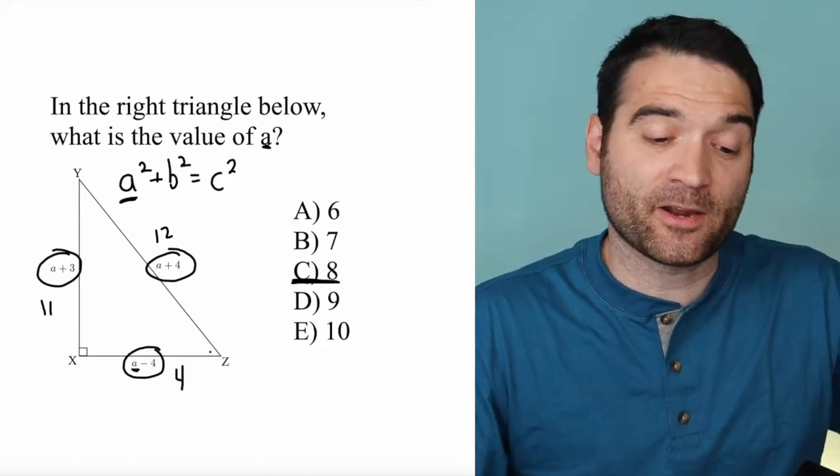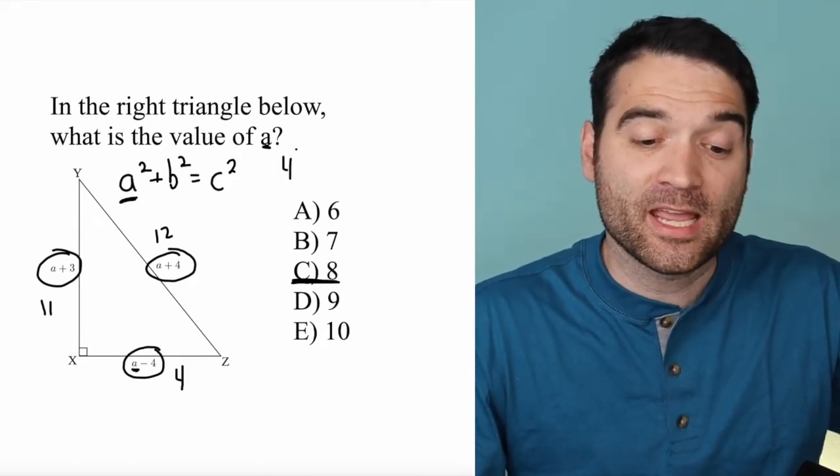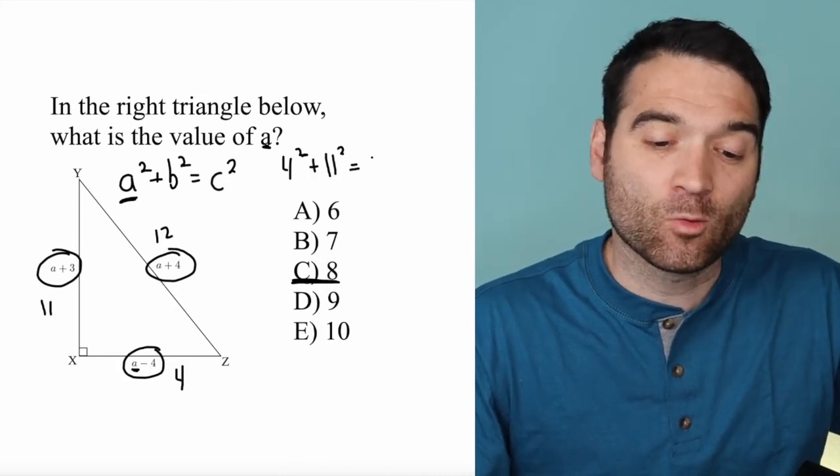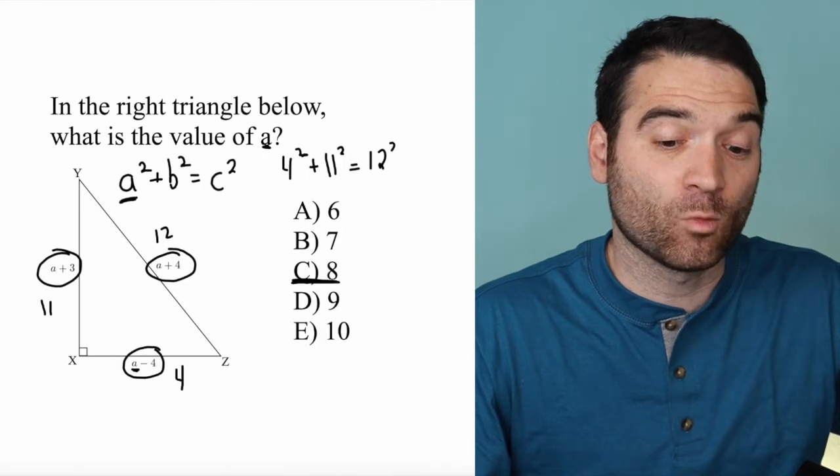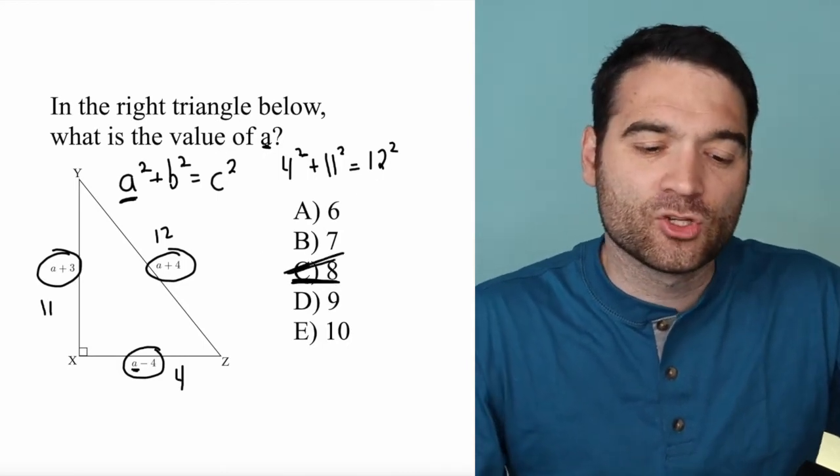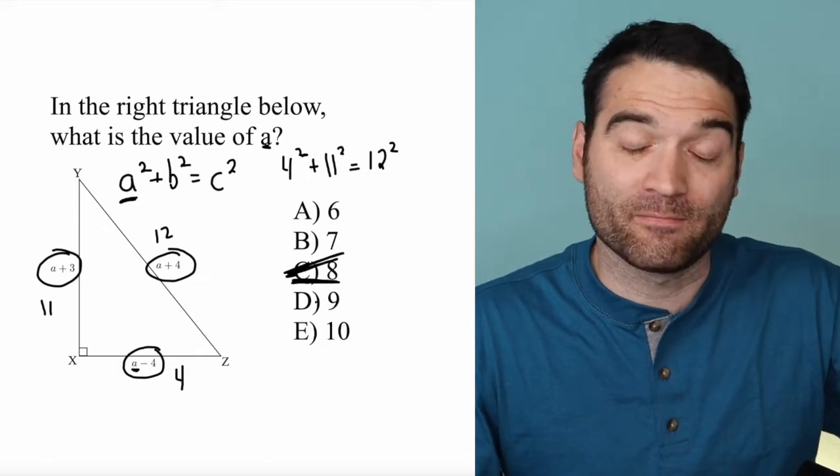Does this fit the Pythagorean theorem? Is 4 squared (16) plus 11 squared (121) equal to 12 squared (144)? It's not. Double-check that on your calculator. So we've got to go to the next one, either up or down.